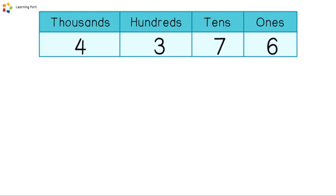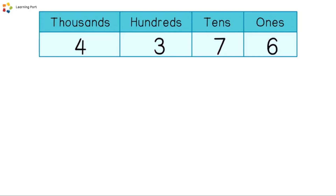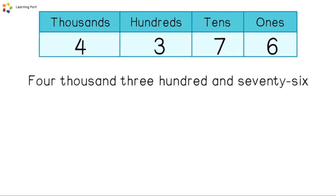Fabian has four thousands, three hundreds, seven tens, and six ones. It is four thousand, three hundred, and seventy-six.